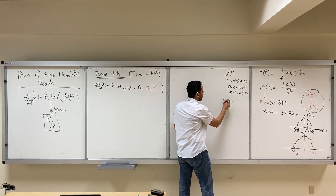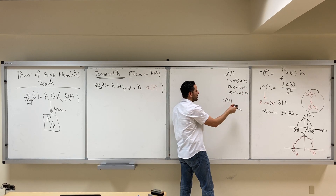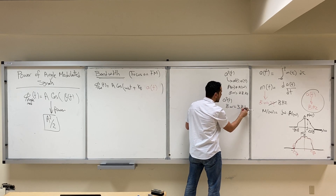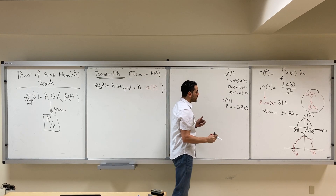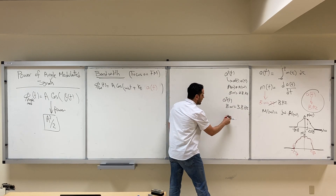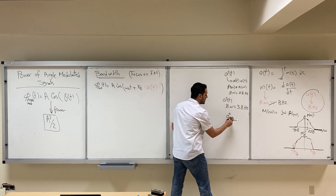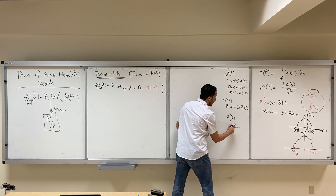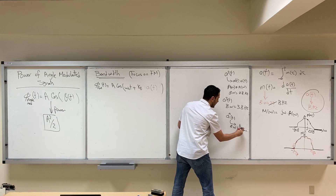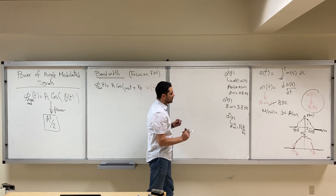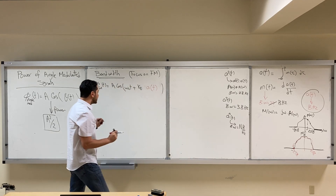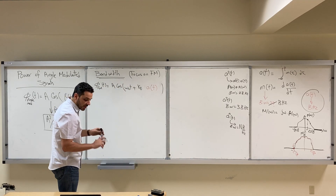Similarly, A³(t) will have a bandwidth of 3b Hz. In general, A^n(t) has a bandwidth of n·b Hz. These are the basic results we will need in our analysis of the FM bandwidth.